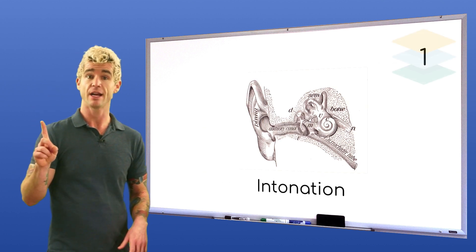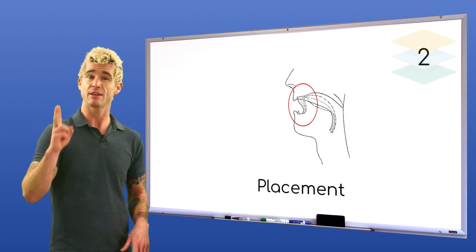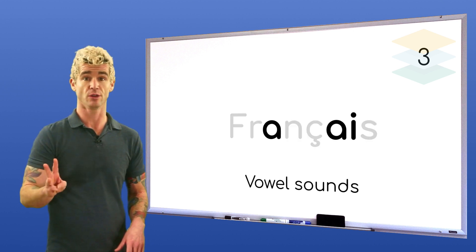Step one, listen to and copy the intonation. Step two, notice and imitate the forward vowel placement. Step three, say the sentence with the vowel sounds only.